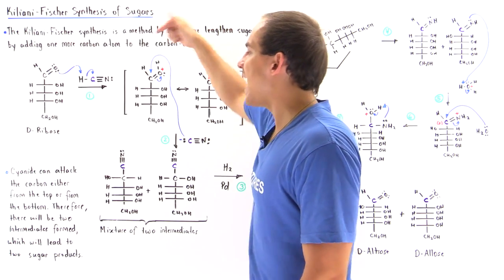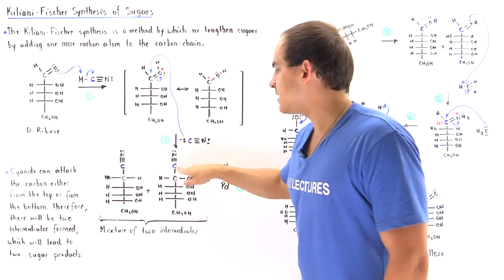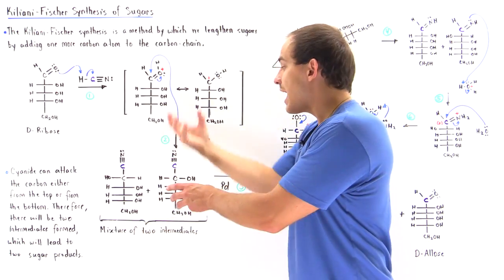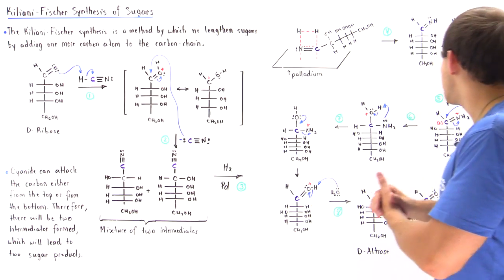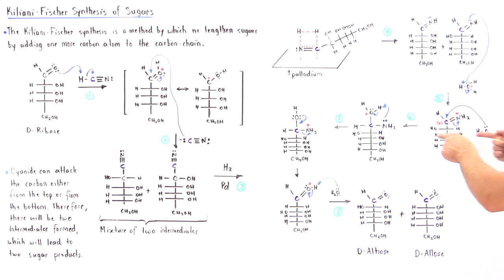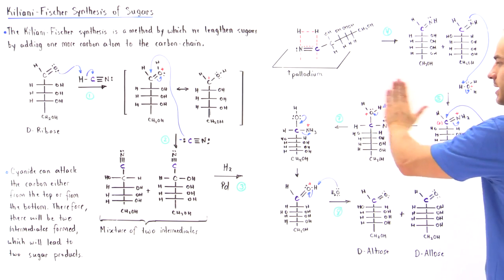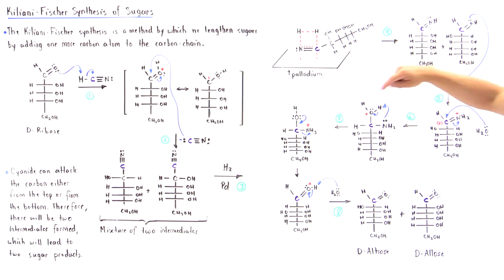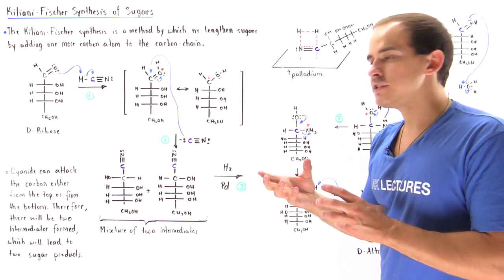In step number six, the water molecule produced in step five, when hydronium protonates this nitrogen, now attacks this carbon nucleophilically, producing this intermediate. Because on this intermediate we have our positive charge on this electronegative oxygen, in the next step, we basically have a shift taking place.